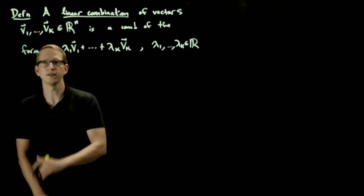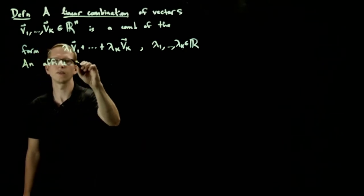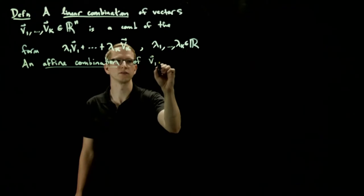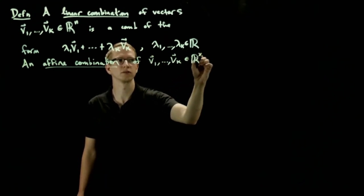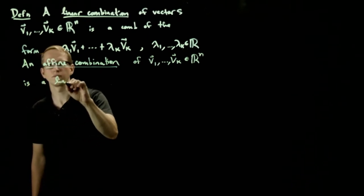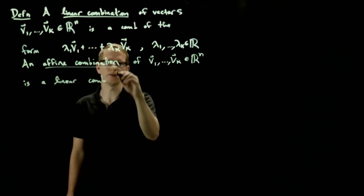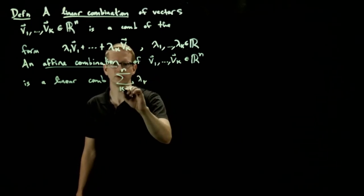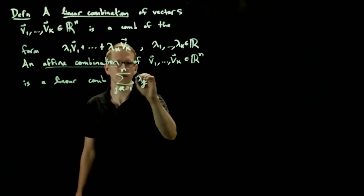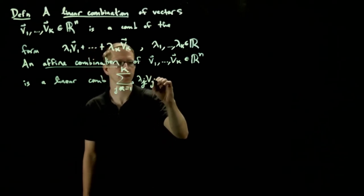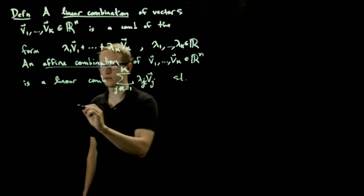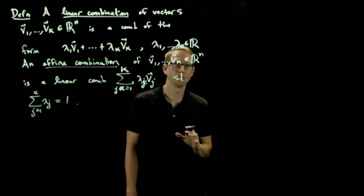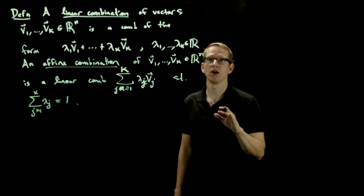And closely related to this, an affine combination of these same vectors is a linear combination. And for short, I may often write just using the summation notation: the sum from j equals 1 to k of lambda j vj, such that the sum of these coefficients is equal to 1. So it's basically a linear combination, but we have an additional constraint on the coefficients.